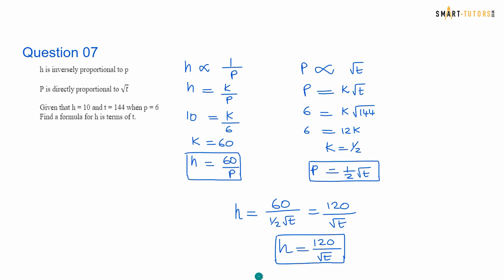Question number 7. H is inversely proportional to p. So h is proportional to 1 upon p. Introduce k upon p. The value of h is given 10, p is given 6. Cross multiply you get k equals 60. So h equals 60 over p. The next one, p is directly proportional to root t. So p equals k root t. 6 equals k square root of 144. 6 equals 12 k because square root of 144 is 12, so k is half. You substitute the equation p equal half root t. Merge both equations. h equals 60 over p is half root t, and the two goes to top and multiply together with 60 is 120 over square root of t.